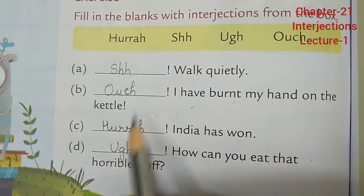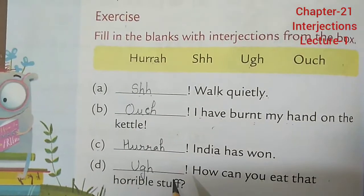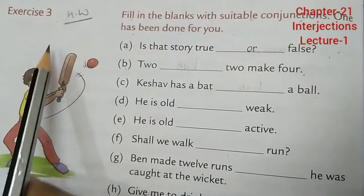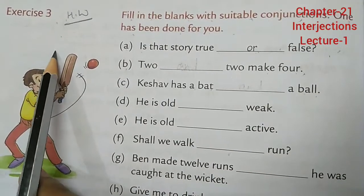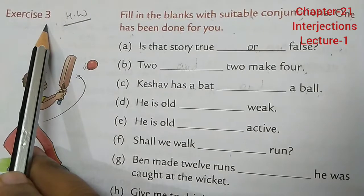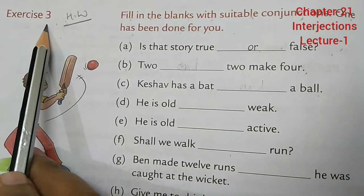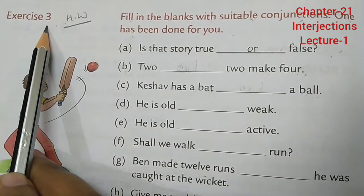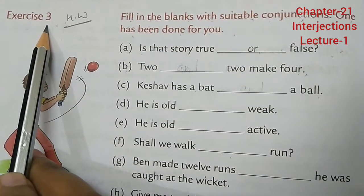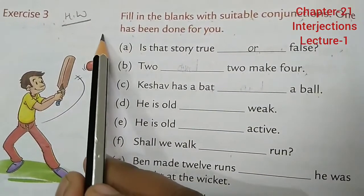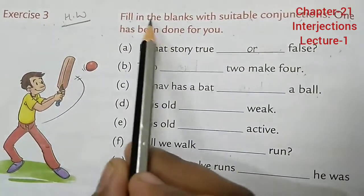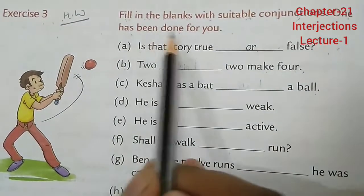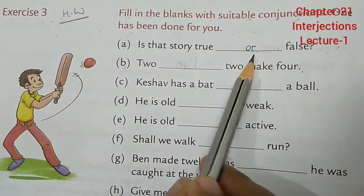In this way you have to complete this exercise. Now let's see the solution of the previous homework. Students, this is page number 80 and this is Exercise 3, which I had given you for homework. This is Chapter 20 and the chapter name is Conjunctions. Conjunctions are joining words. Let's see the solution of this exercise.